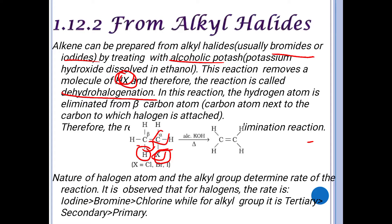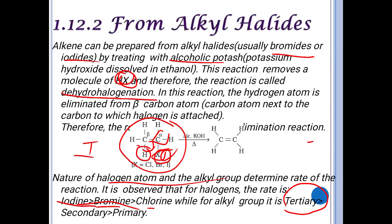From the haloalkane or alkyl halide, we get alkene when treated with alcoholic KOH. The nature of the halogen atom and the alkyl group determine the rate of reaction. Iodine gives the fastest reaction, then bromine, then chlorine. For the alkyl group, tertiary reacts fastest, then secondary, then primary.